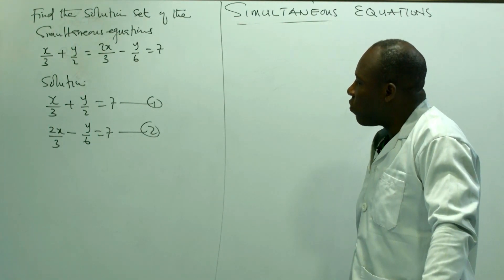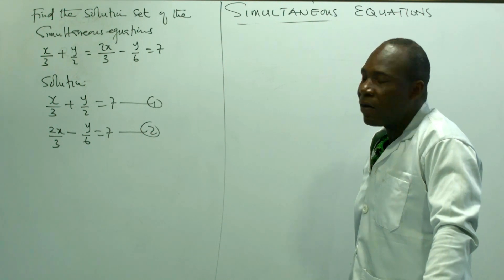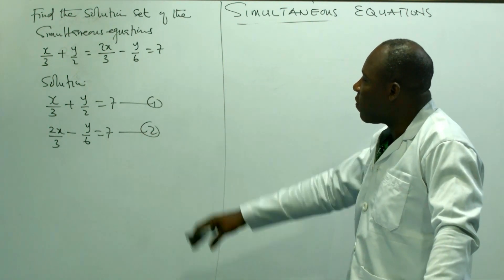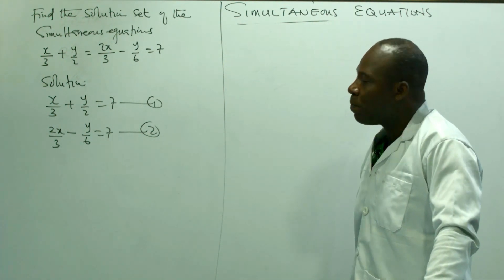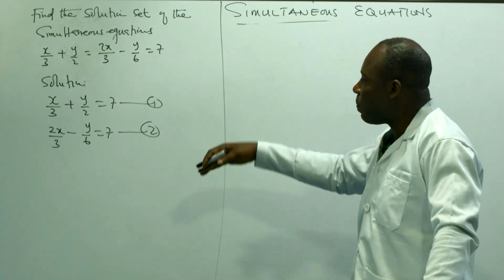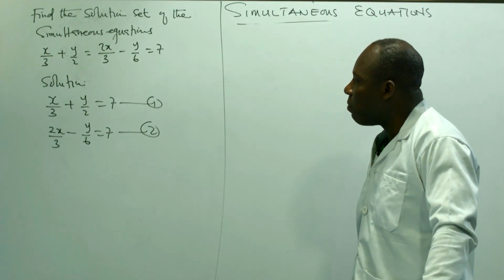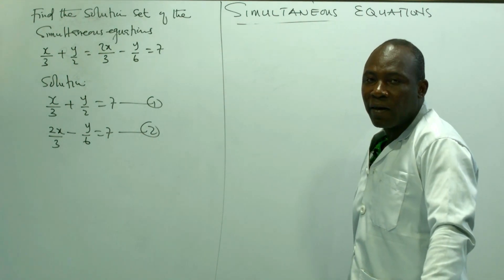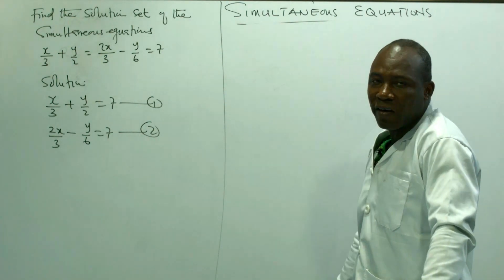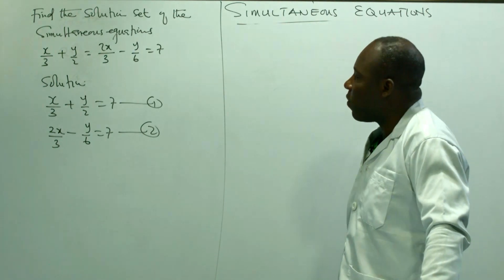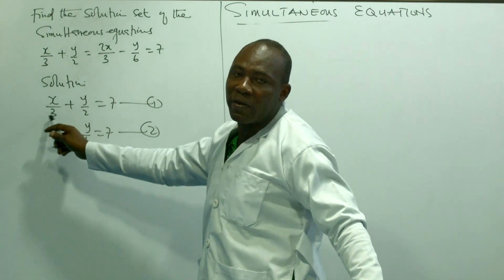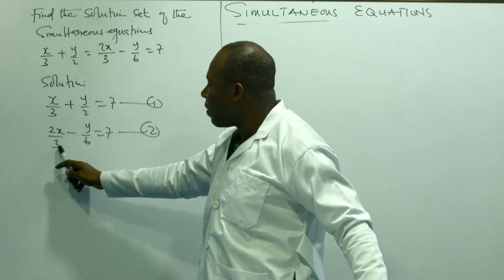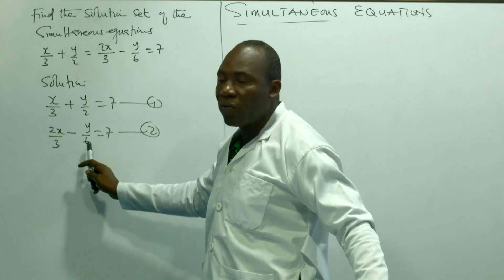And in equation 2, we have the denominators being 3 and 6. So we can remove the fractions by multiplying through equation 1 by 6 and equation 2 by 6 as well, because the LCM for 2 and 3 is 6.